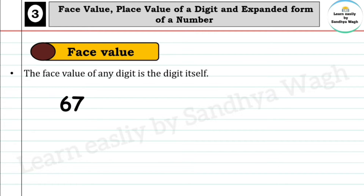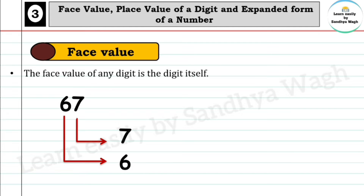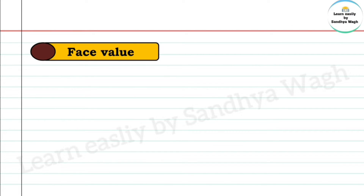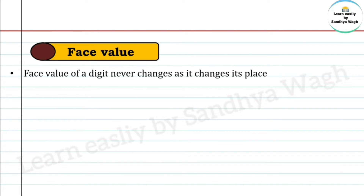Let's take an example. In the number 67, the face value of 7 is 7, and the face value of 6 is 6. The face value of a digit never changes as it changes its place.